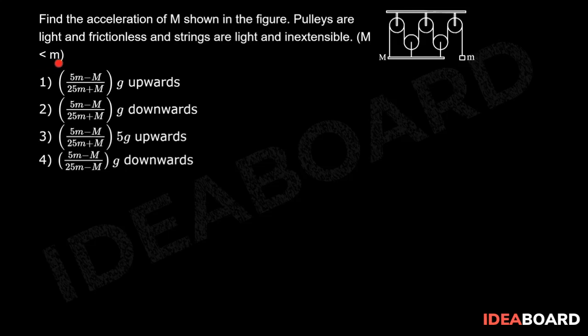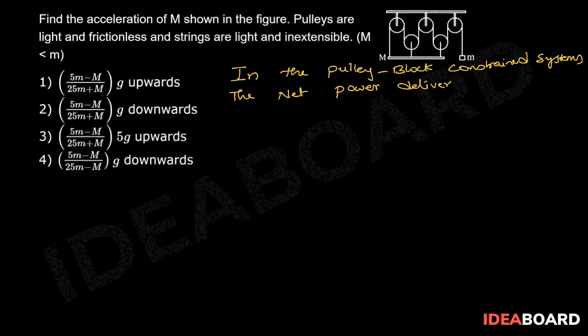Capital M is less than small m. In the pulley block constrained systems, the net power delivered by the tension force is always zero.